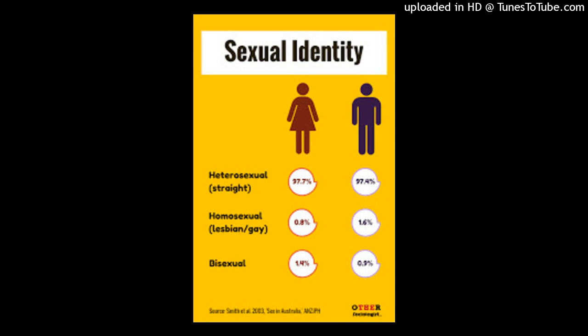Heterosexuals and homosexuals may also be referred to informally as straight and gay respectively. North America is a heteronormative society supporting heterosexuality as the norm — consider that heterosexuals are often asked 'when did you know you were gay?' but heterosexuals are rarely asked 'when did you know that you were straight?'